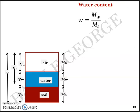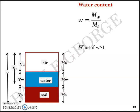The next term is water content. Water content w is equal to mass of water divided by mass of solids (Mw/Ms). Note that this is based on mass, not volume, so it falls on the right-hand side of the three-phase system diagram. It is usually expressed as a percentage but can also be represented as a fraction.